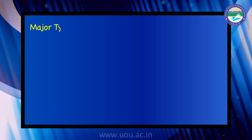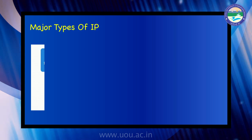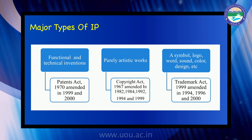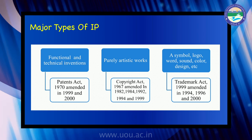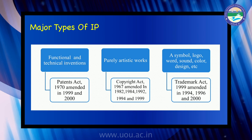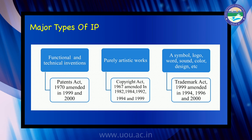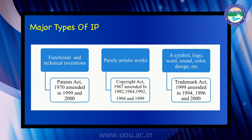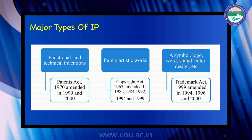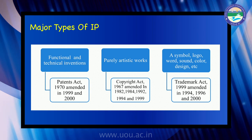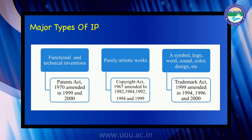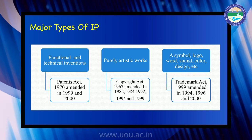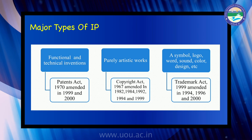The major types of intellectual property are: functional and technical inventions, protected by the Patents Act 1970, amended in 1999 and 2000; purely artistic works, protected by the Copyright Act 1967, amended in 1982, 1984, 1992, 1994, and 1999; and symbols, logos, words, sounds, colors, and designs, protected by the Trademark Act 1999, amended in 1994, 1996, and 2000.